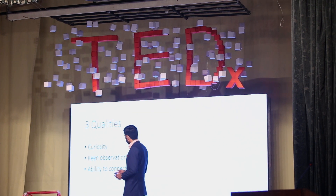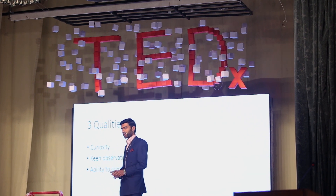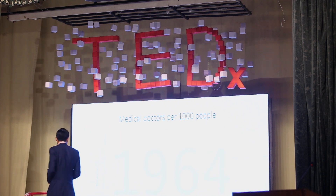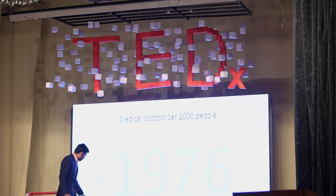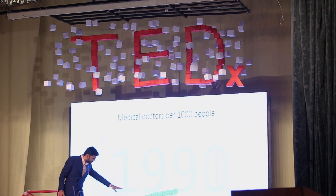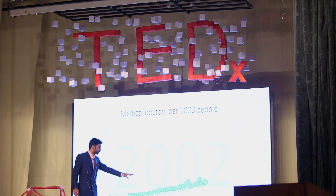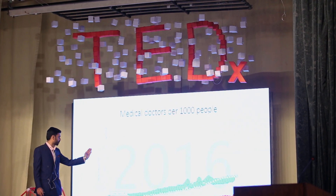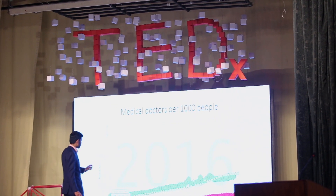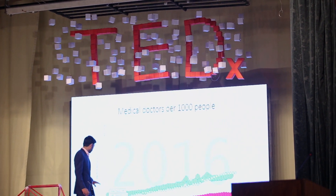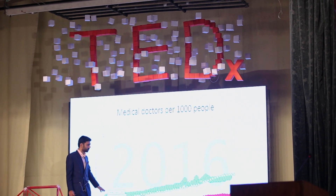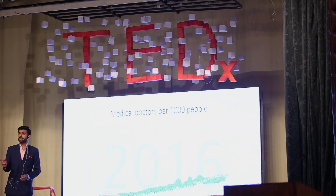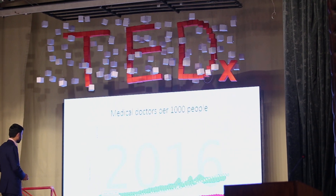To demonstrate the differences between us and the developed countries, I'd like to go through some visualizations made using trend-analyzing software by the Guidefinder organization. The blue dots represent Nigeria, the pink circles represent Pakistan, the green circle is the United States, and the yellow one is the United Kingdom. This graph shows medical doctors per thousand people over time starting from the 1900s. The US and UK have about three medical doctors per thousand people, compared to one for Pakistan and Nigeria — meaning developed countries have 300% more doctors than we do. We have to come up with something else if we really want to address our problems and fight the global health crisis.